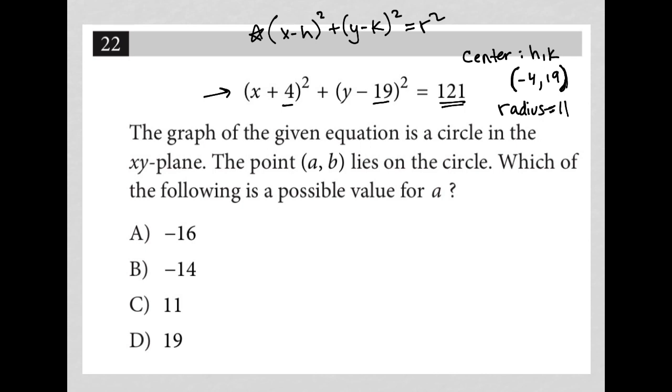I could graph that if I wanted to. I'm going to read the question and just see what exactly they want me to do with this. So the graph of the given equation is a circle in the xy-plane. The point (a,b) lies on the circle. Which of the following is a possible value for a? Well, this would be a great question for Desmos.